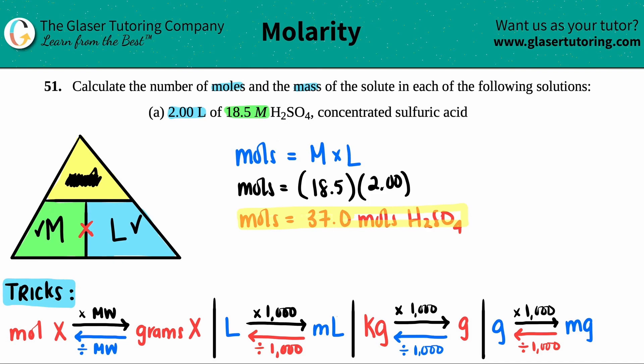Now the second part is, well, I need the mass. And remember, mass is another way of saying grams. The mass is in grams. So how do I go from a mole value to a gram value? Look down here on the tricks. If I have a mole of some element or compound, I can find the grams of the same element or compound by going this way.